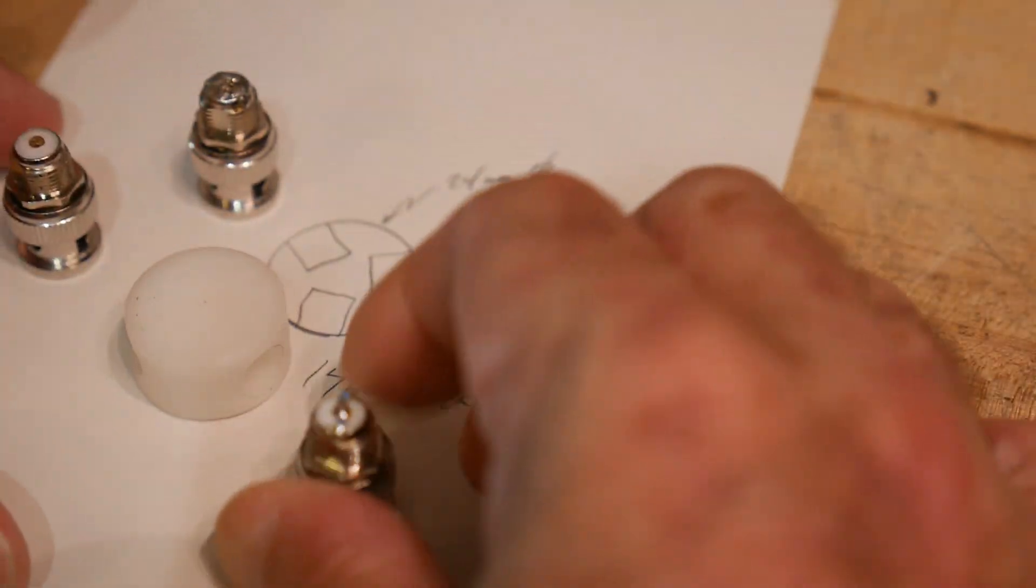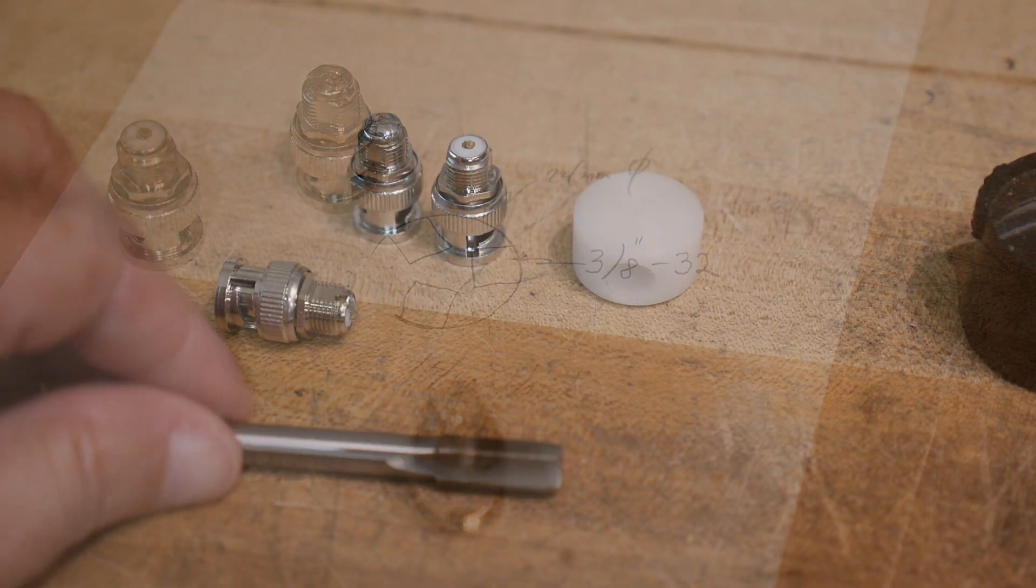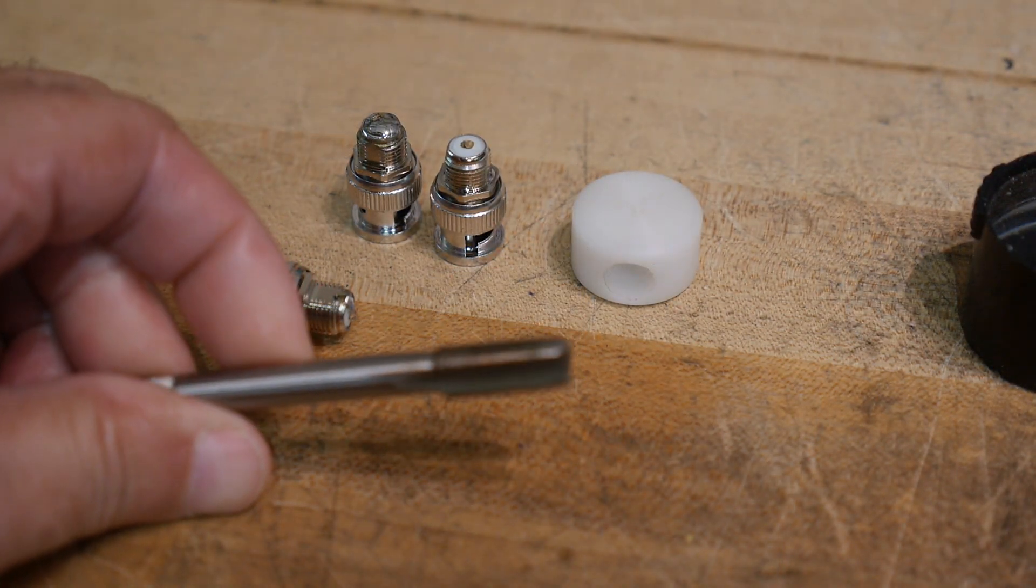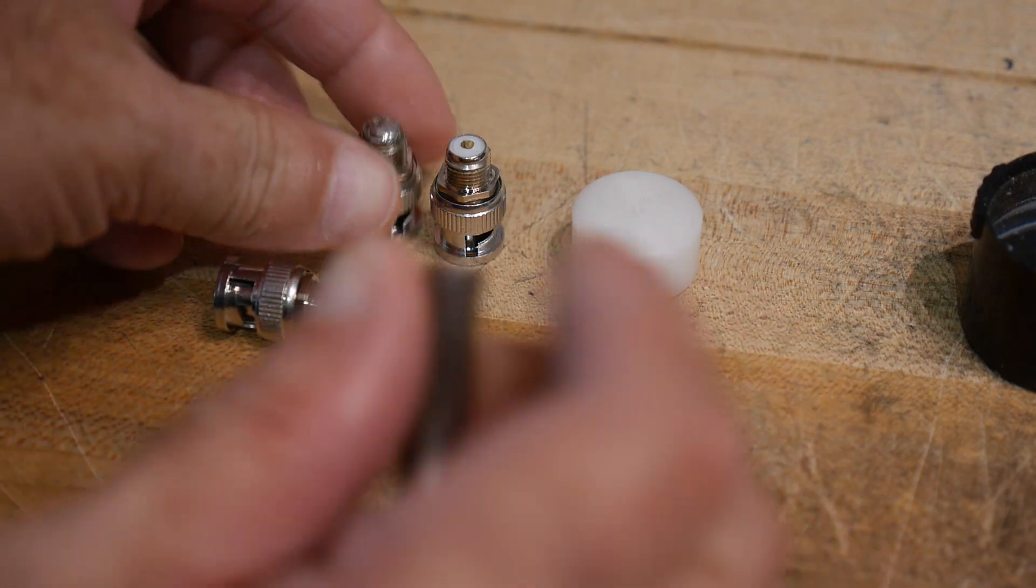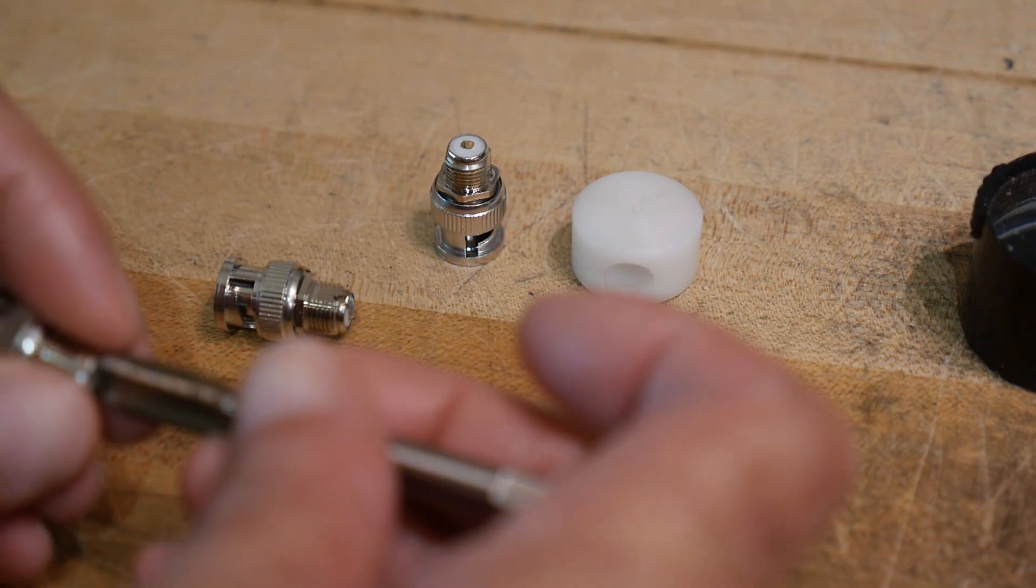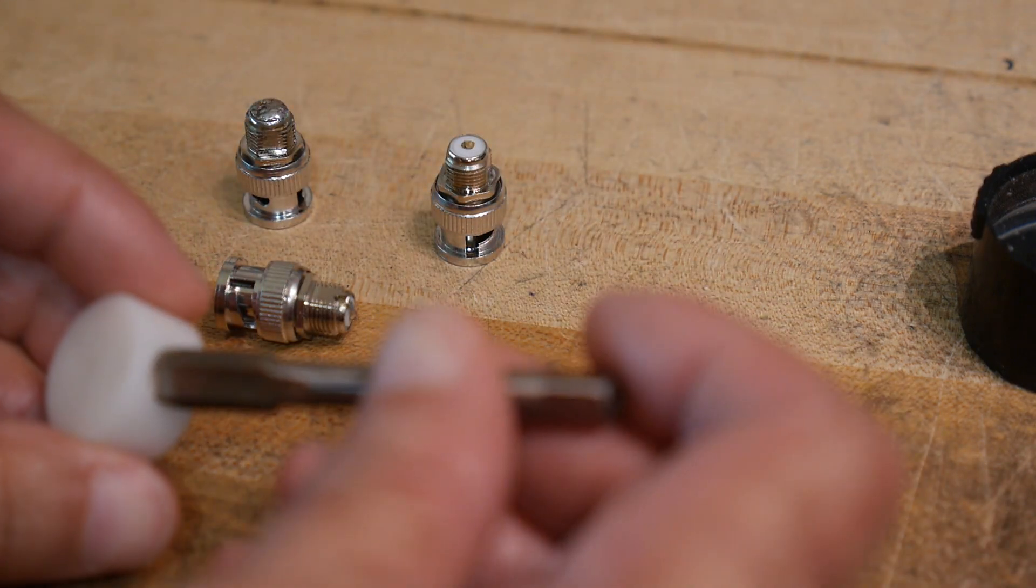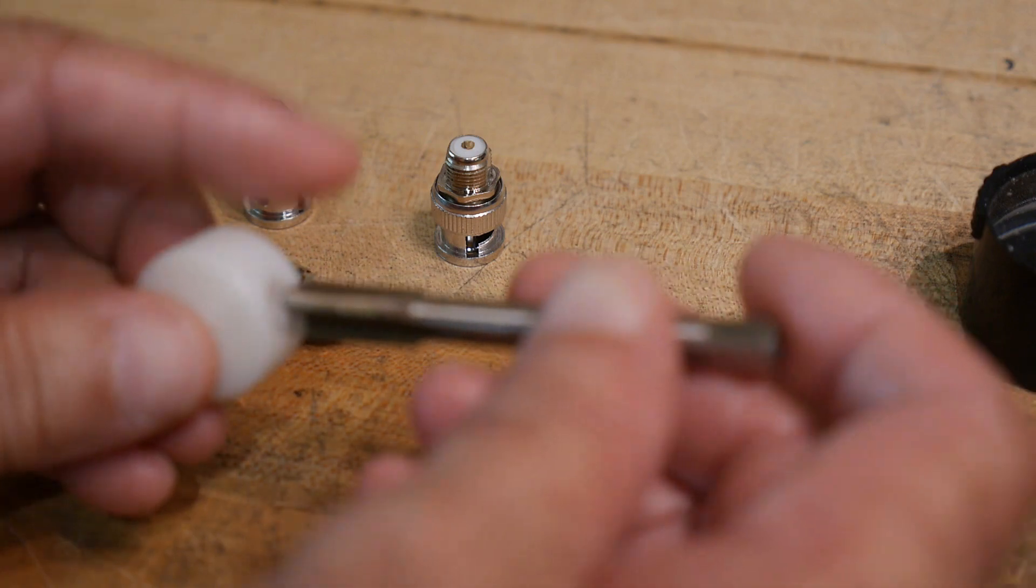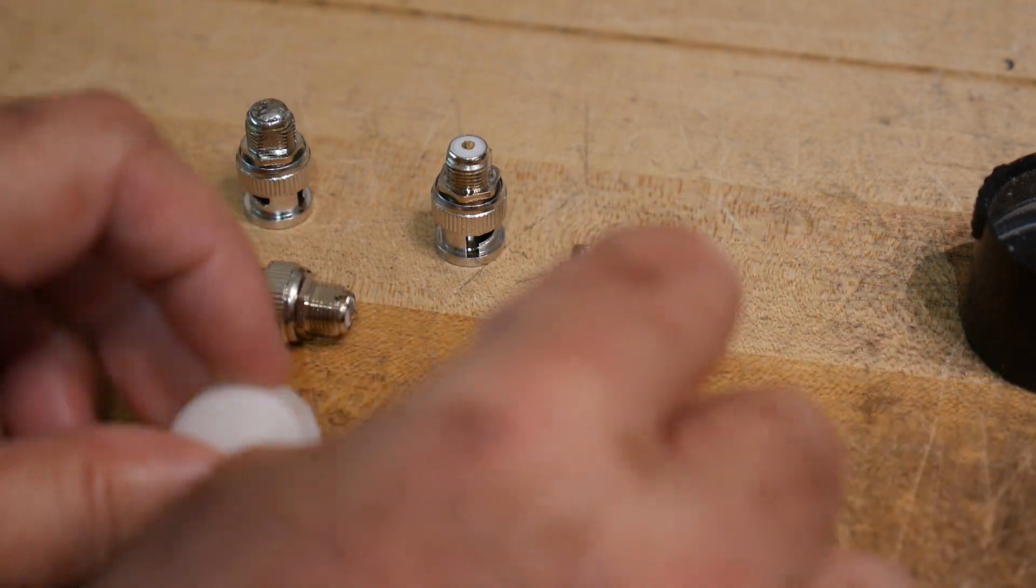Alright, got this in the mail today so this is my 3/8-32 which should be the same pitch as the BNCs. So I'll go ahead and tap the three holes in my Delrin here and we'll get it.